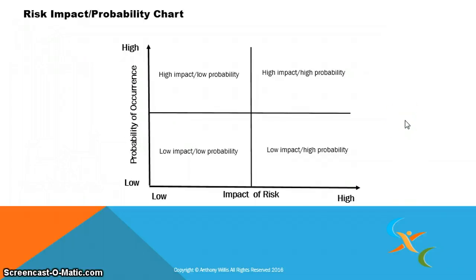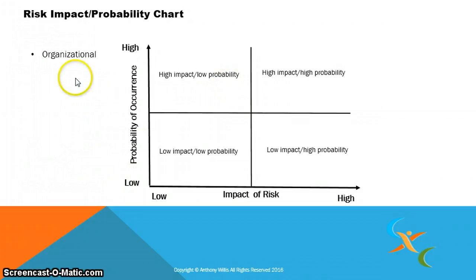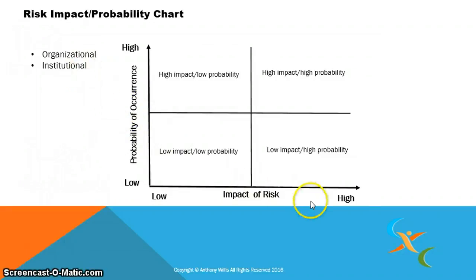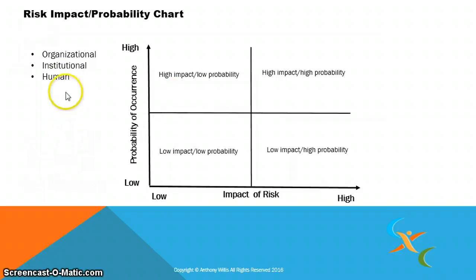Once again, we use a structured approach to analyzing the Guyana education sector plan. We looked at the organizational factors and what impact they would have on the probability of occurrence. Institutional factors — their level of impact and probability of occurrence. On the Guyana sector plan, institutional factors would have considerable impact and high levels of occurrence. So those are key factors.